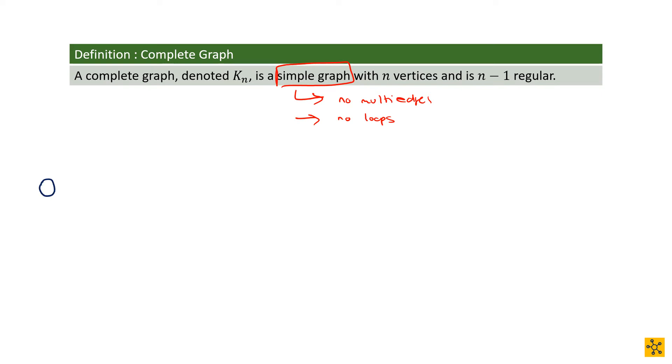Say you have three vertices: V1, V2, V3. V1 must be connected to V2. V1 must be connected to V3 because V1 needs to be adjacent to V2 and V3. It must be adjacent to all the other vertices in the set, in the graph. V2 must have the same function. So V2 must be adjacent to V1, and V2 must be adjacent to V3. And the same thing for V3. V3 also has to be adjacent to every other vertex in the set. For a complete graph, we have a symbol representation: K subscript N, where N is the number of vertices.